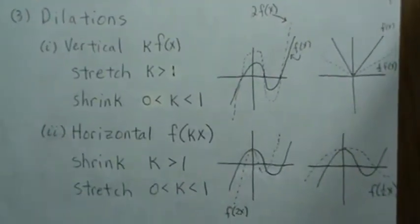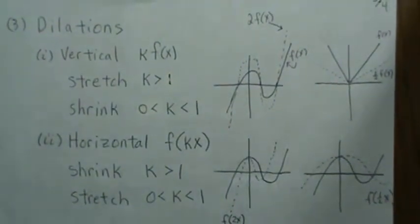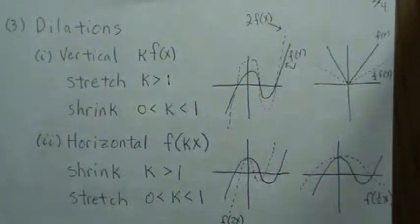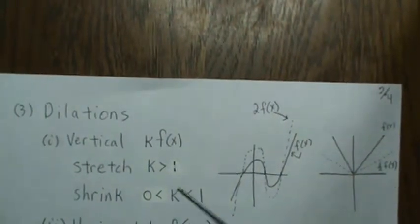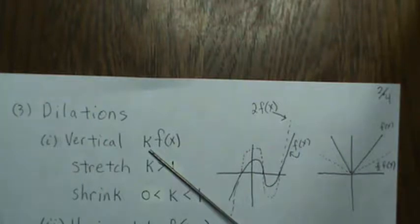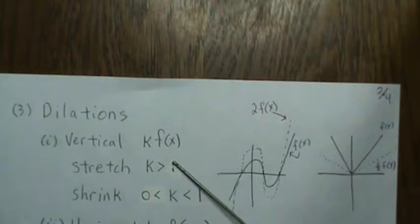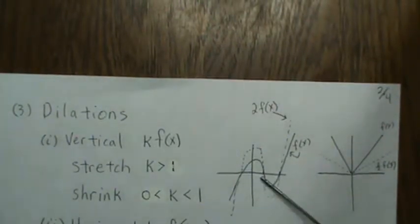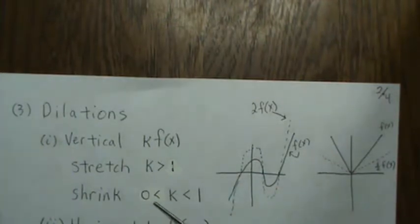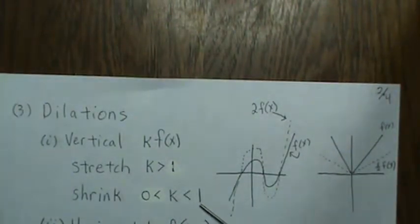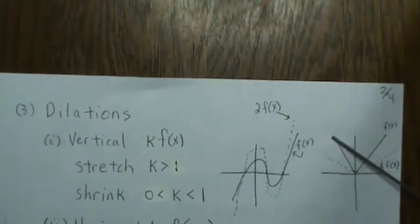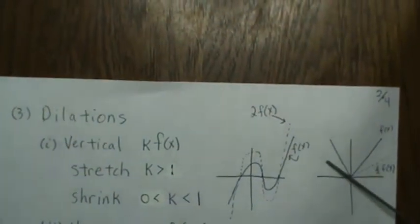Dilations stretch or shrink the graph vertically or horizontally. For vertical dilations, multiply the original function by a constant k. If k is greater than one, everything is stretched up. If k is between zero and one, the graph is shrunk down, like with the absolute value function multiplied by one half.